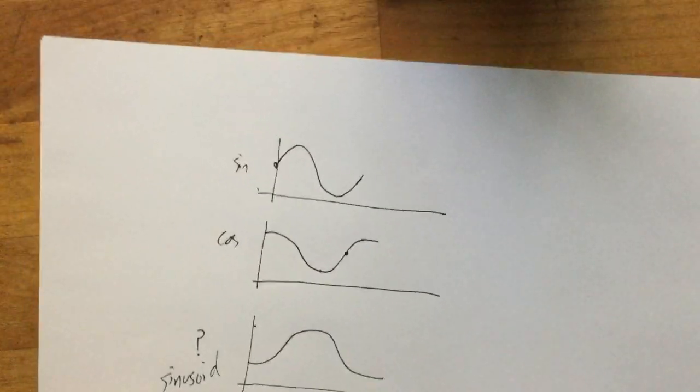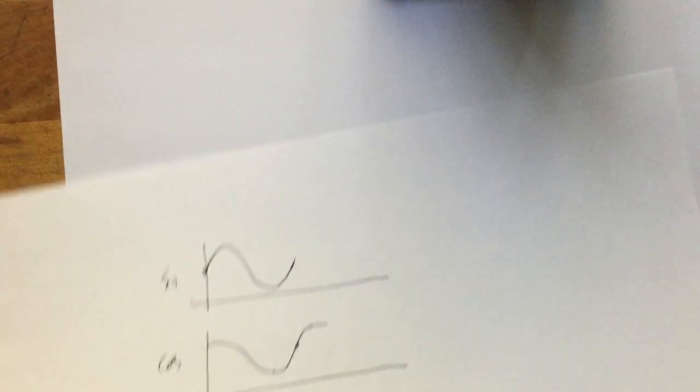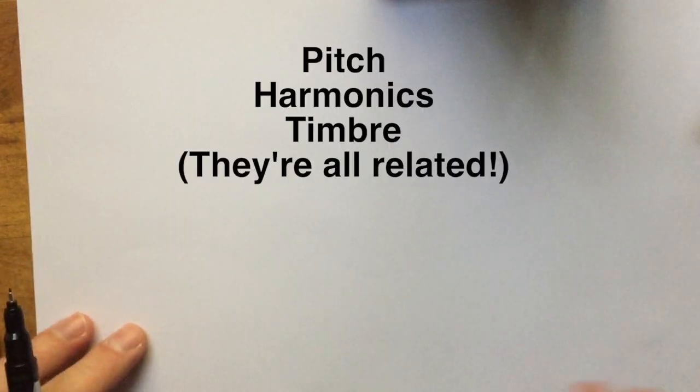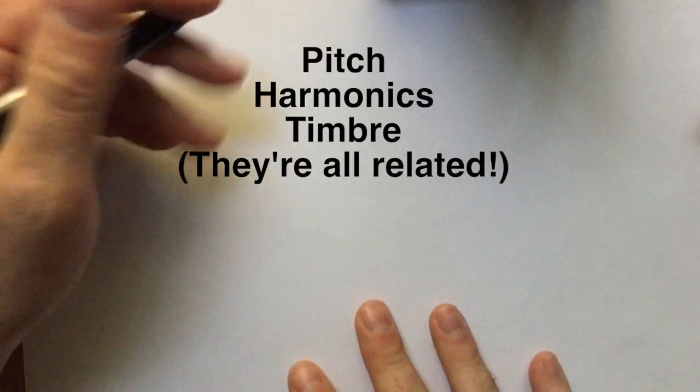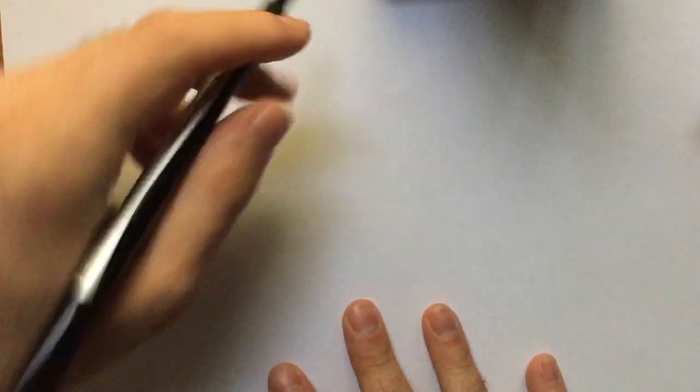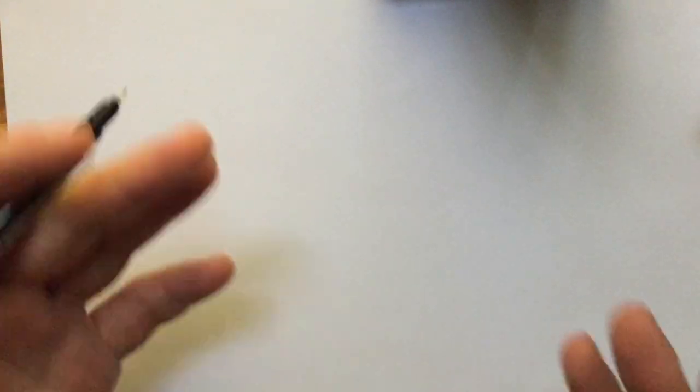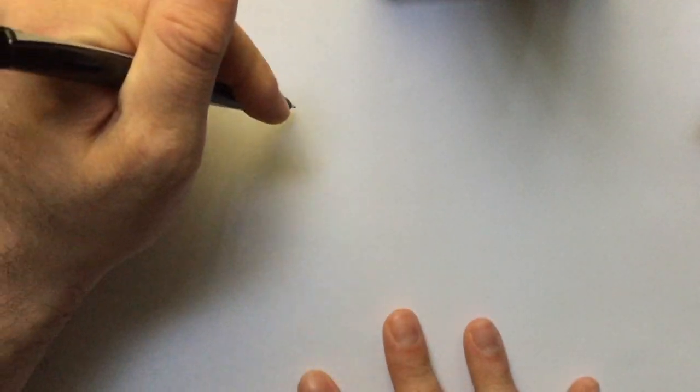So we're going to talk a bit about pitch harmonics and timbres. So you're going to hear a lot about harmonics, but what really is a harmonic? What a harmonic is, is one of the single sinusoids that make up one of the pitched sounds that we hear.